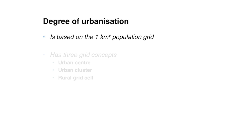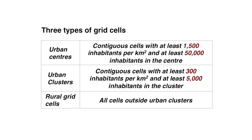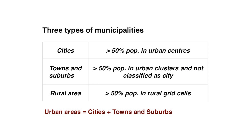How does the degree of urbanization work? It is based on a one-kilometer population grid, just like before, and it has three grid concepts. You already know the urban center. Now you will learn about the urban cluster and the rural grid cell. These three grid concepts are translated into three types of municipalities: city; towns and suburbs; and rural areas. For the types of grid cells: urban centers, which I already explained; then urban clusters, which use a lower density — not 1,500 but 300 — and a lower minimum population threshold — not 50,000 but 5,000. Together these create urban clusters, and all the cells around those are rural grid cells. Translating that into municipalities: 50% of population in an urban center means a city; 50% of your population in urban clusters but not a city means you're a town or a suburb; 50% of your population in a rural grid cell means you're a rural area. Urban areas are cities plus towns and suburbs.